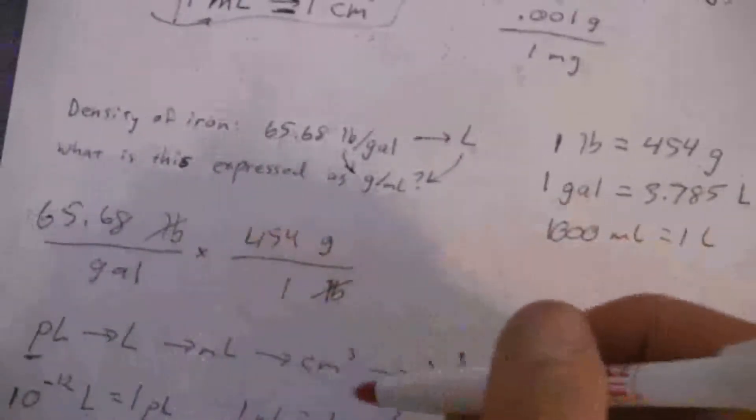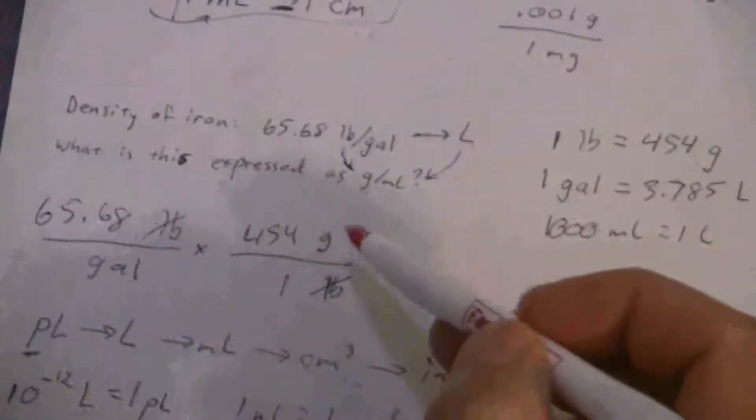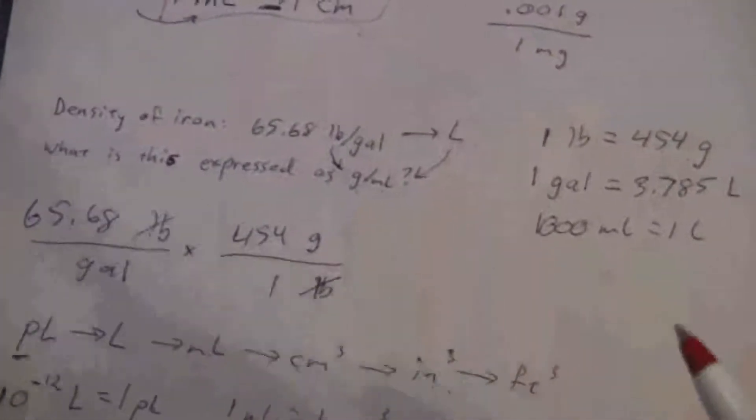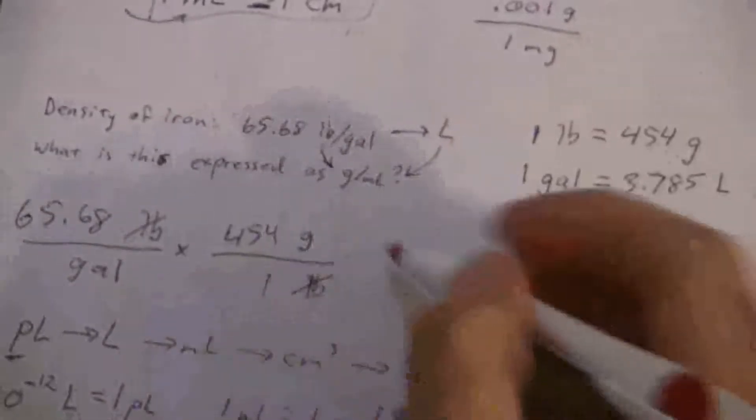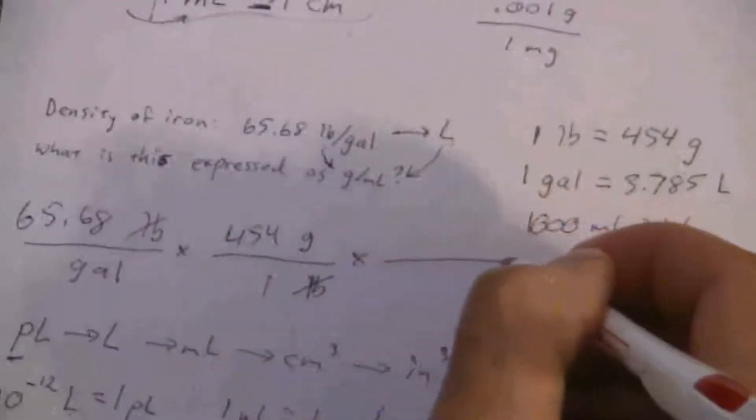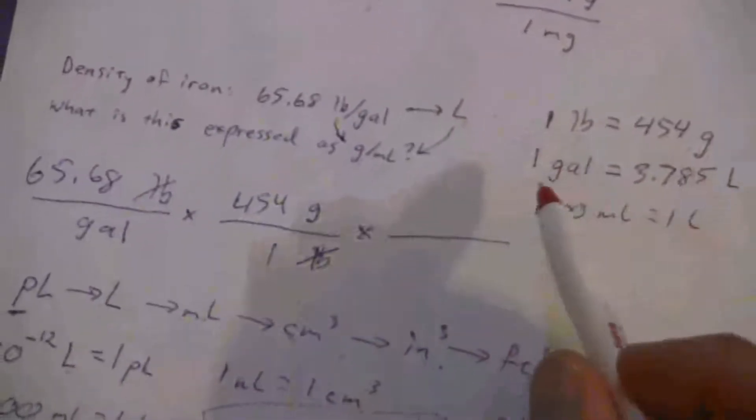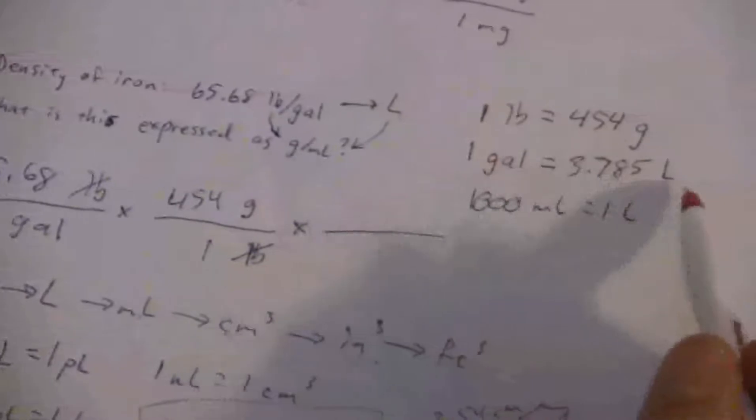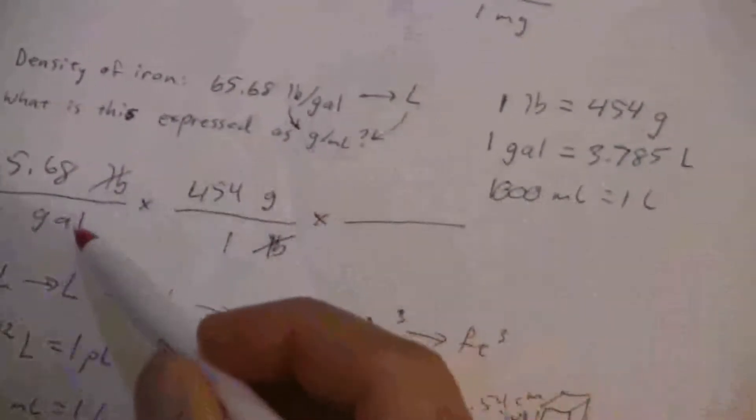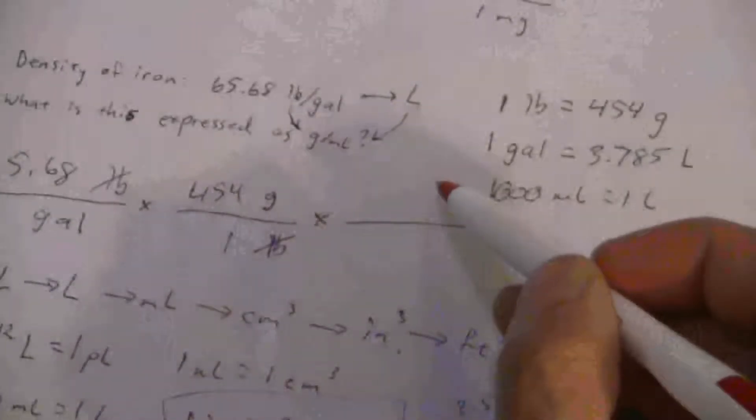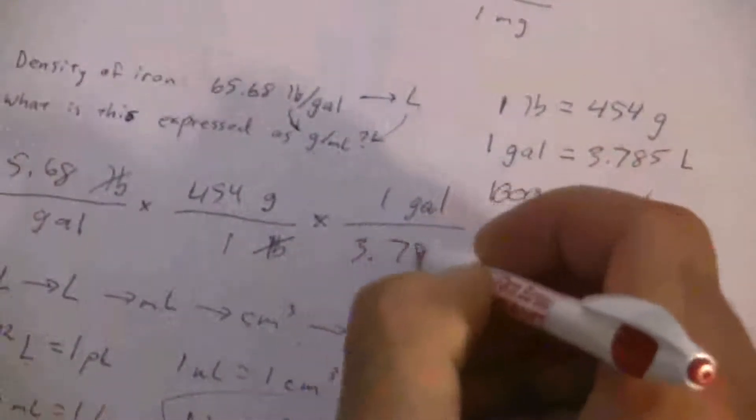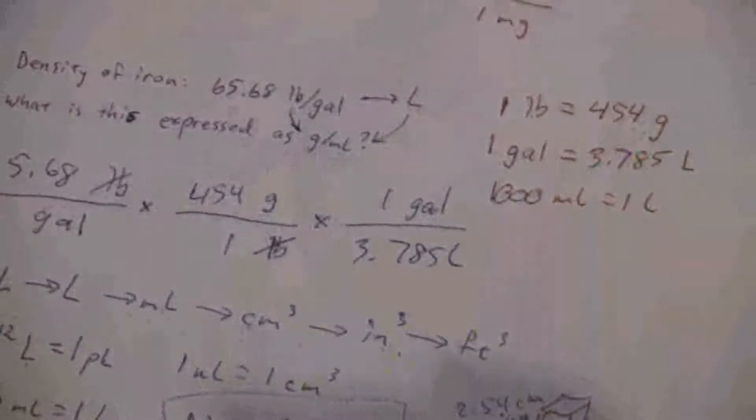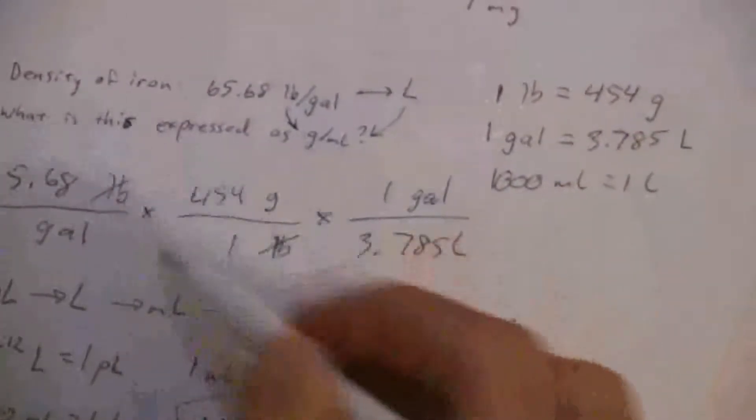Now my pounds cancels and I have at this point, if I did my calculation, I'd have the density expressed as grams per gallon. So I'm halfway there, I just need grams per milliliter. So now let's put in my next conversion factor: one gallon is 3.785 liters. So where does gallon need to go? Well it's on the bottom here, so it's got to go on the opposite side. One gallon to 3.785 liters.